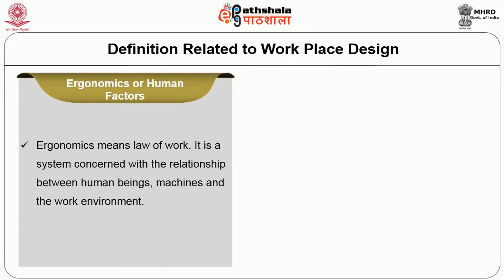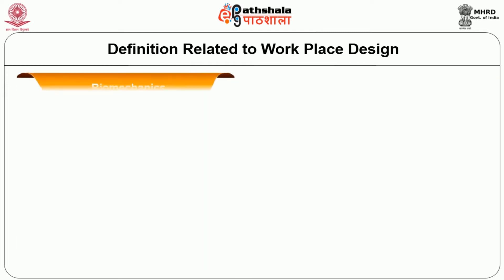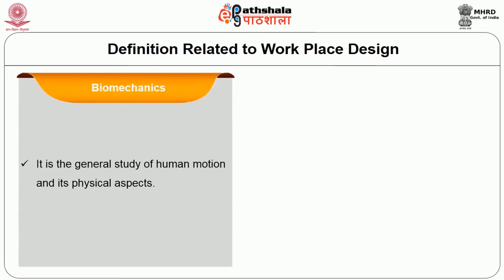Ergonomics means the law of work. It is a system concerned with the relationship between human beings, machines and the work environment. Anthropometry or anthropometrics — anthropometry means human measures and it is the study of human body measurements. At its most basic, anthropometrics is used to help scientists and anthropologists understand physical variation among humans. Biomechanics is the general study of human motion and its physical aspects.